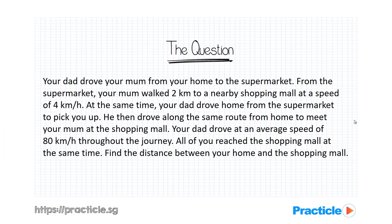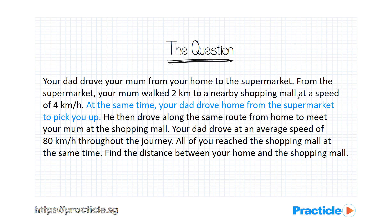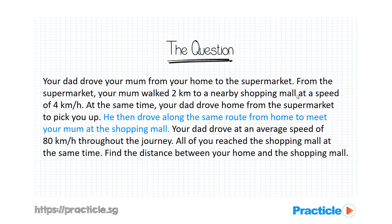Here's an example of a speed question that you might see in Primary 6. Your dad drove your mom from your home to the supermarket. From the supermarket, your mom walked 2km to a nearby shopping mall at a speed of 4km per hour. At the same time, your dad drove home from the supermarket to pick you up. He then drove along the same route from home to meet your mom at the shopping mall.